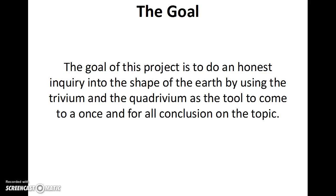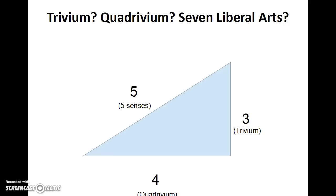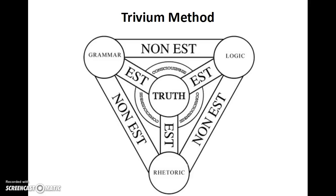The goal of this project is to do an honest inquiry into the shape of the earth. We're going to use the trivium and the quadrivium. As a quick reminder: we have our five senses to gather data, then we use the trivium to organize that data and create non-contradictory thinking, and then we use the quadrivium to further our understanding of the world around us.